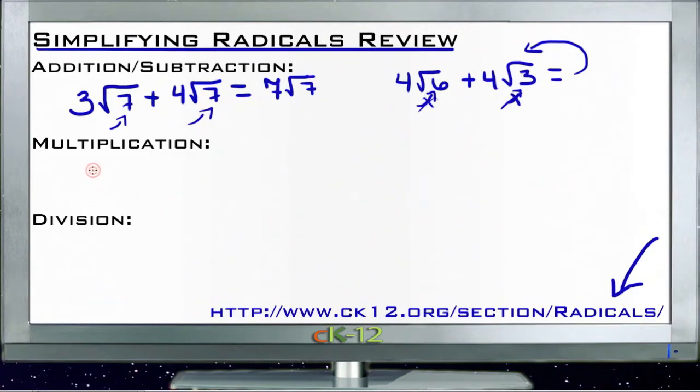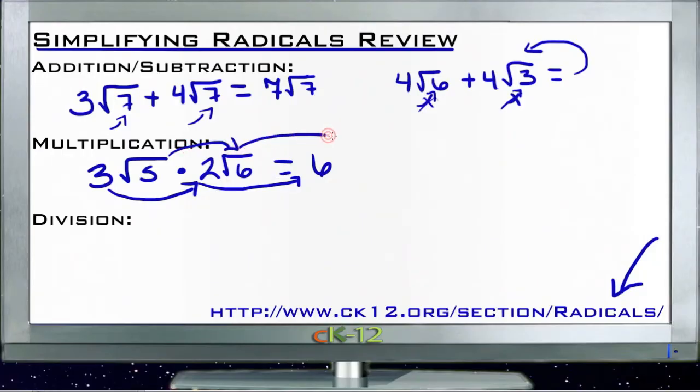For multiplication, we just take the number outside and the number inside and multiply them by the other number outside and inside. If I have three roots of five times two roots of six, I multiply my whole numbers—three times two gives me six—and then multiply my roots: root five times root six is root 30. Then if I can simplify the root of 30, I do so; if I can't, I leave my answer as this in its final form.